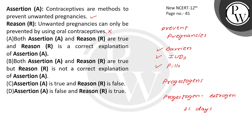So here, there are not only oral contraceptives to prevent unwanted pregnancies — this reason is incorrect. So what will be the correct option? Assertion is true, reason is false. Both assertion and reason are true, reason is a correct explanation — this is incorrect. Both assertion and reason are true but reason is not a correct explanation — this is also incorrect. Assertion is true, reason is false — option C is correct. Assertion is false, reason is true — this is incorrect.